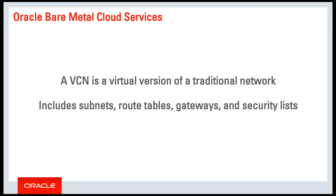A virtual cloud network includes subnets, route tables, gateways, firewalls — all of the traditional resources you would expect in an on-premises network.